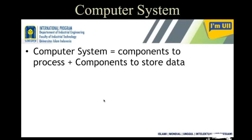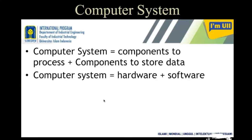What is a computer system? A computer system is nothing but some components which are used to process anything and something which you need to store. So that means there are two main basic components of a computer system: one is a processing unit, another one is a storing unit.